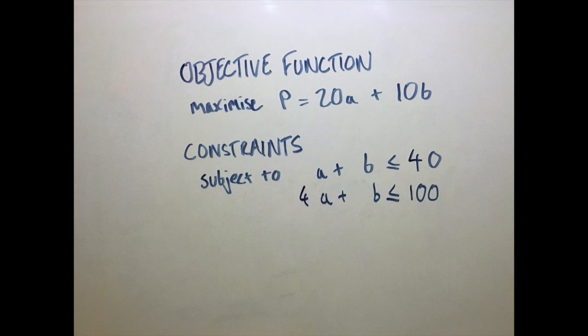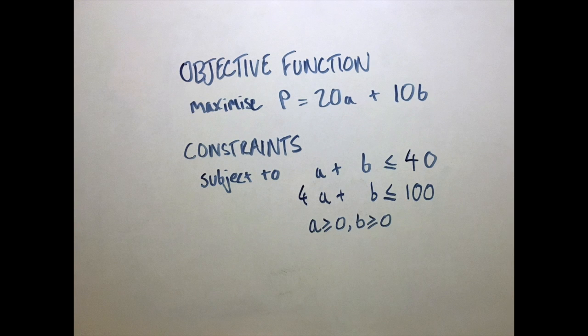In addition to these two constraints, we also have non-negativity constraints, that is, A ≥ 0 and B ≥ 0. This is because we can't make negative amounts of a chair.